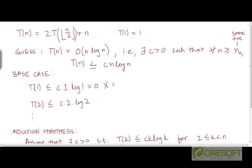But this doesn't affect our claim, because the claim is not that for all n, T(n) ≤ c·n·log n. The claim is that this inequality applies beyond a certain n₀. So if it does not apply at n = 1, it means we need to set n₀ to some value larger than 1.